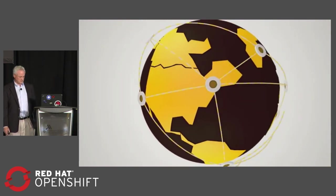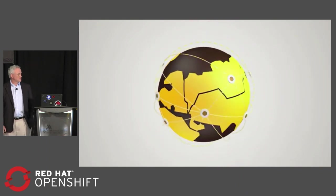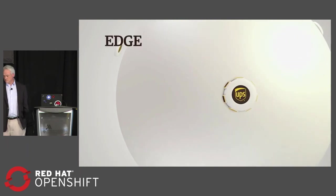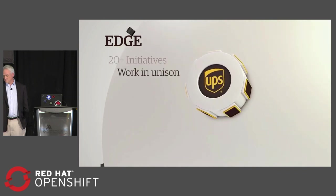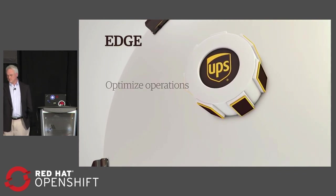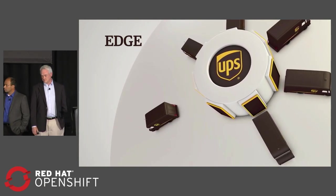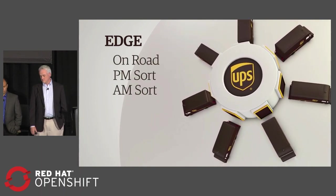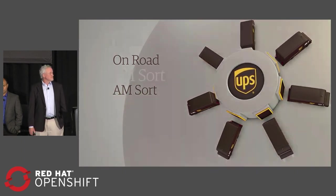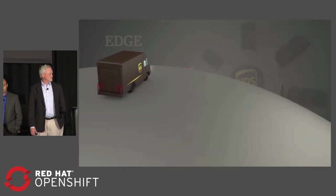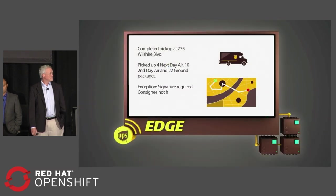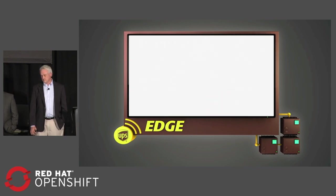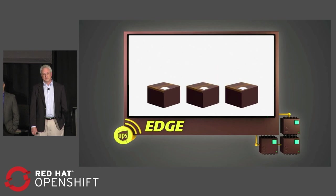You start with data and UPS has one of the strongest data networks in the world. Today we're creating new ways to put it to better use. An example is Edge — a suite of more than 20 initiatives in development that will work in unison to optimize operations. It leverages data to assign tasks and minimize driver and inside employee overtime for on-road, PM sort, and AM sort operations. To get an idea of how Edge works, let's visualize the PM sort. At night, our operations tackle many tasks, some simple, others complex. With data we collect throughout the day, a central computer constructs a detailed dynamic operating plan that breaks down assignments into tasks for a variety of work groups to perform. One of those is the sort plan.